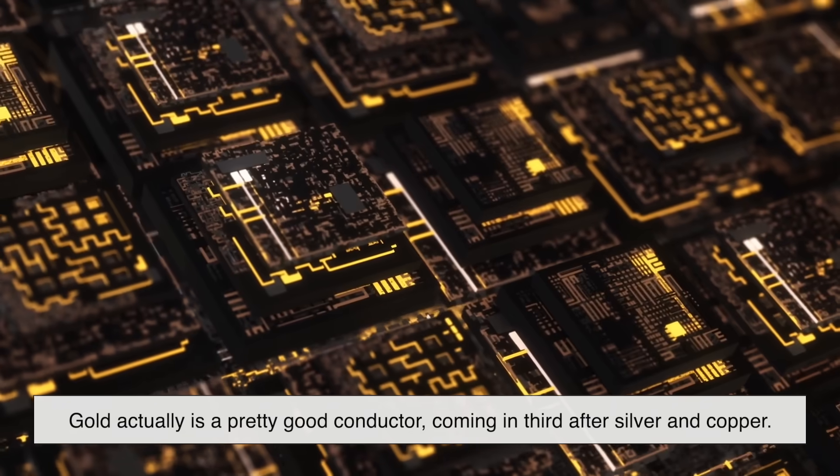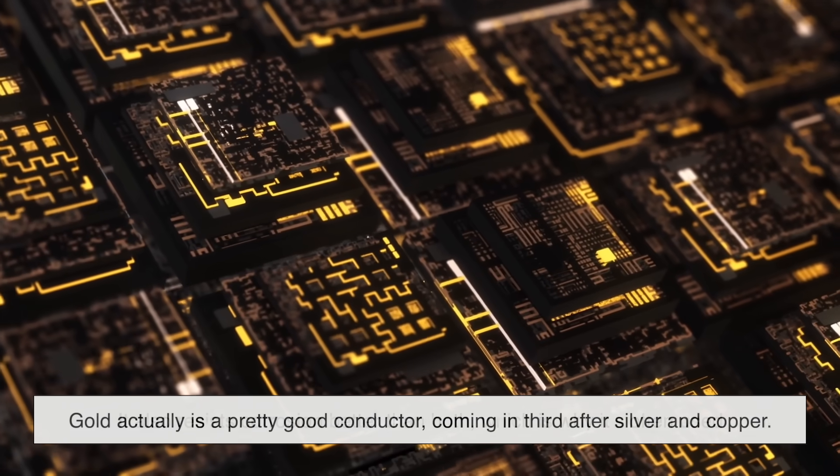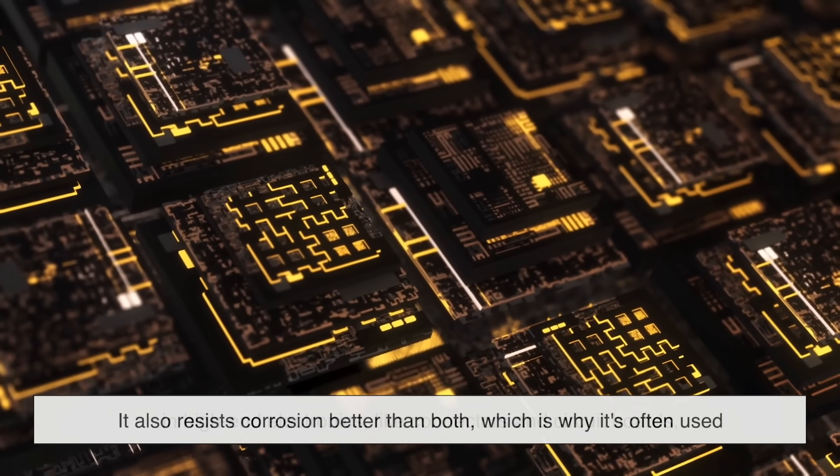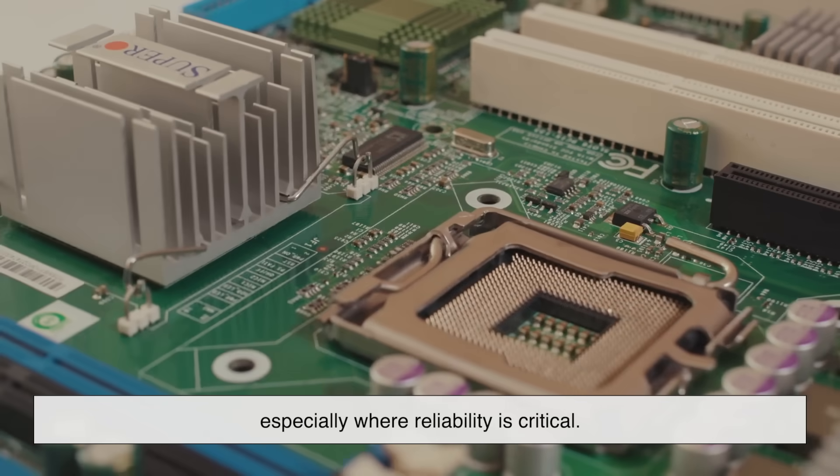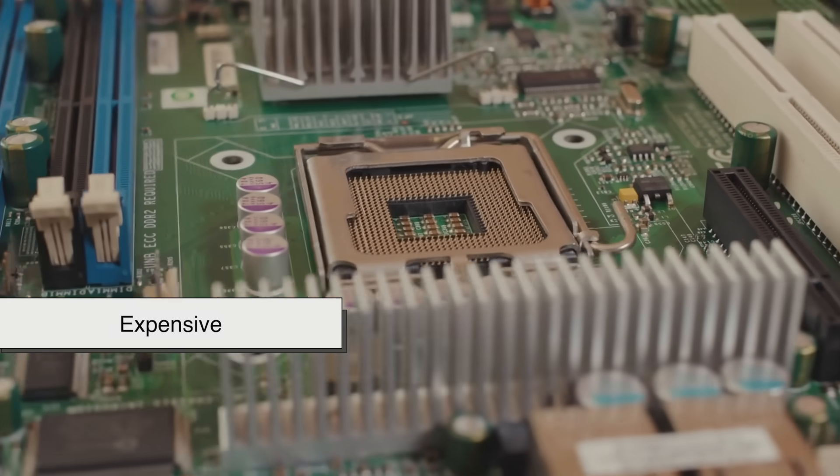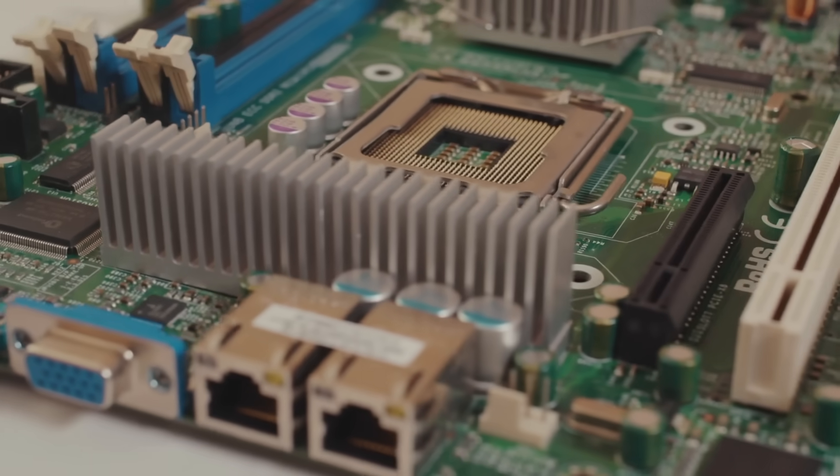Gold actually is a pretty good conductor, coming in third after silver and copper. It also resists corrosion better than both, which is why it's often used in high-end electronics, like connectors and circuit boards, especially where reliability is critical. But again, gold is very expensive, so it's used selectively, only where performance outweighs cost.